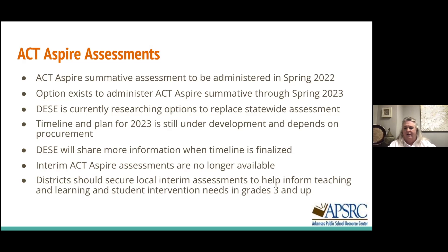DESI will share more information when the timeline is finalized. We have an assessment we can plan for. We know the structure of it, the subjects and strands. The interim ACT Aspire assessments are not available — they were retired; they didn't perform on the new platform they shifted to. I want to encourage you to ensure that in your local districts you have found a way to secure local interim assessments to help inform teaching and learning, so you know where your students are, where you need to go, and what their intervention needs are. In grades three and up, the state provides one at K-2, and they also have funding to offset licensure costs through eighth grade this year. If ACT Aspire was your option for the interim piece and that is no longer available, you have an option to use one of the four approved vendors.